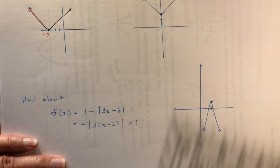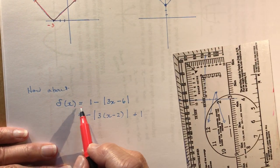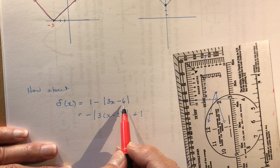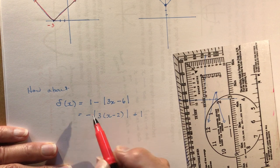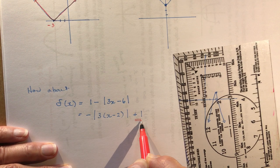And the last one. I have this function g(x) = 1 minus the absolute value of 3x minus 6. You can rearrange equations, I throw the one over here. That gives me a vertical shift up 1.